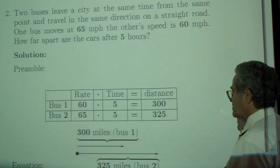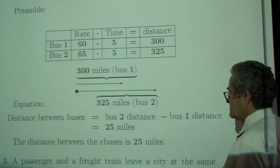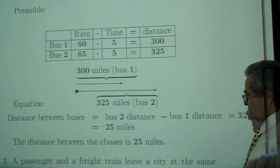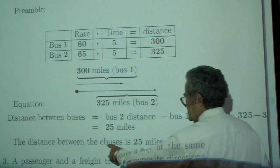In the second problem, we subtract instead of adding. So the buses are 25 miles apart. That C is a misprint.